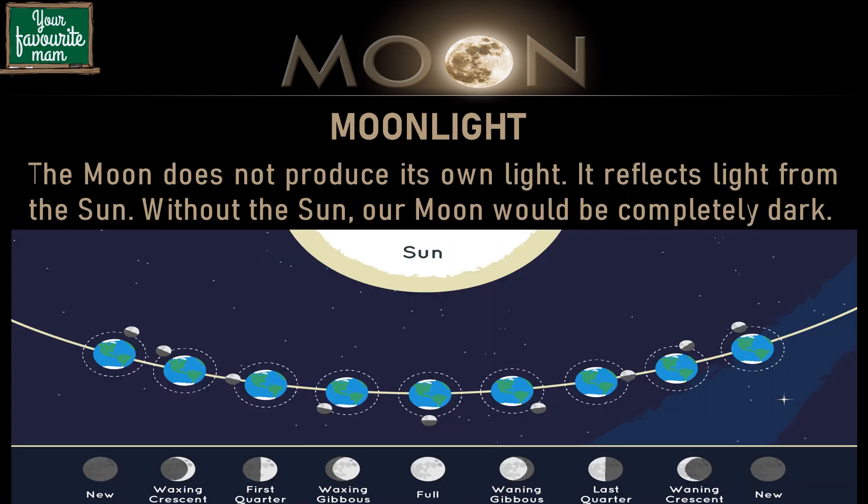The moon does not produce its own light. There is only one source of light in our solar system and that is the sun. Without the sun, our moon would be completely dark. What is referred to as moonlight is actually just sunlight reflecting off the moon's surface. The sunlight comes from one direction and always illuminates one half of the moon — the side facing the sun — while the other side remains dark.